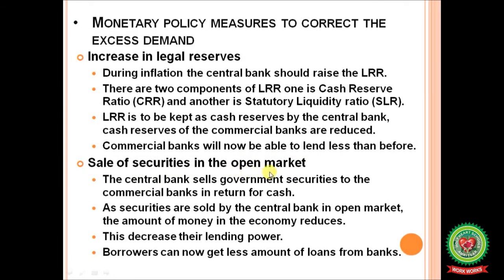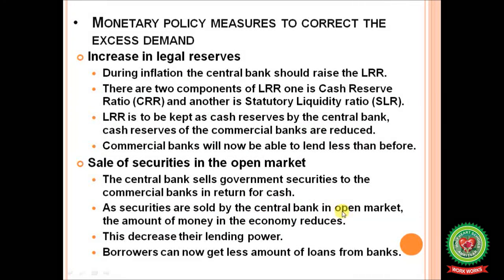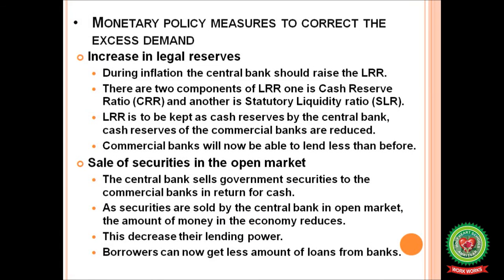Sale of securities in the open market: the central bank sells government securities to commercial banks in return for cash. As securities are sold, the amount of money in the economy is reduced because cash moves to the central bank and securities move to commercial banks or the public. This decreases the lending power of commercial banks, so borrowers can get less loans from banks due to higher interest rates.